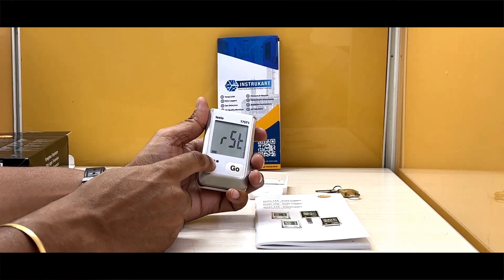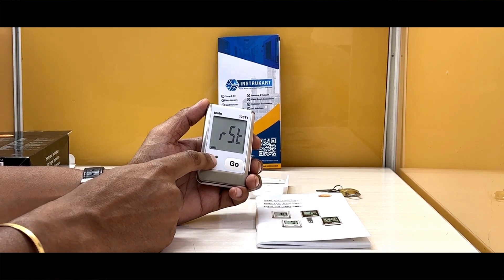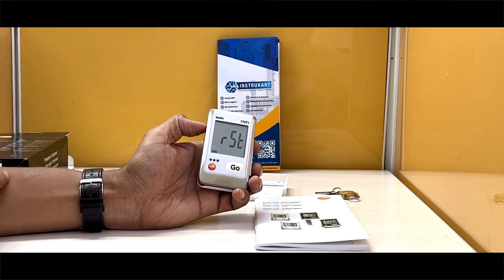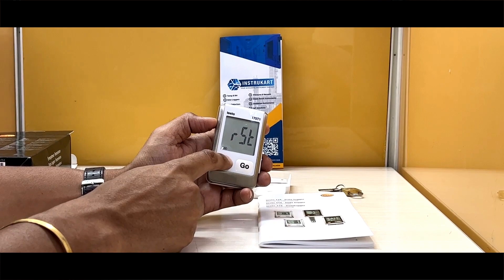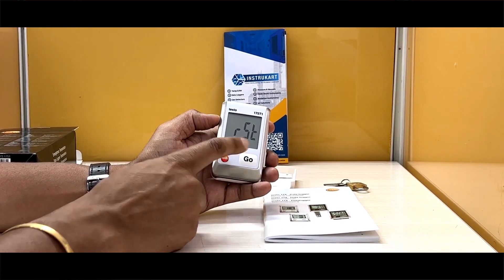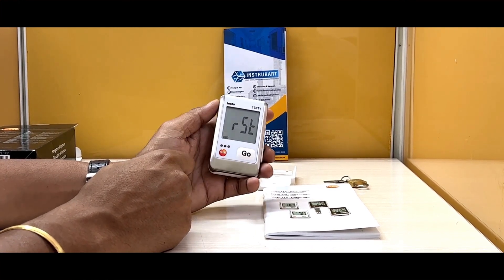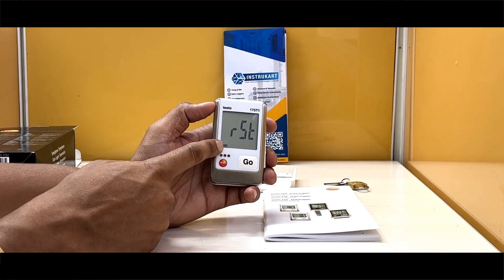We have certain indications over here which show what state the data logger is in, whether it's an error state, data is being logged, data is not being logged, or any other status shown with these three indicators: red, orange, or green. There's one button operation and a big LCD display with a battery indicator.